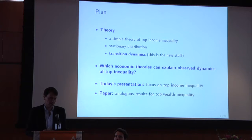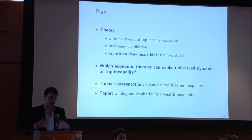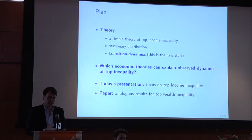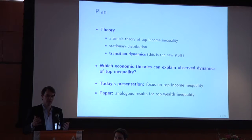Here's the plan for the rest of my talk. I'm going to show you a bit of theory — the simplest possible theory of top income inequality. I'll first show some properties of the stationary top income distribution, then study transition dynamics, which is the new stuff. Then we'll use these results to ask which specific economic theories can potentially explain the observed dynamics of top inequality. Due to time constraints, I'll mainly focus on top income inequality, though in the paper we do an analogous exercise for top wealth inequality.